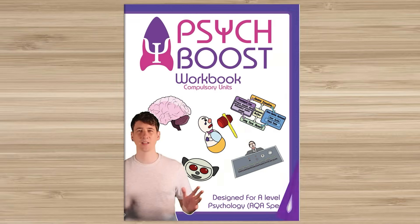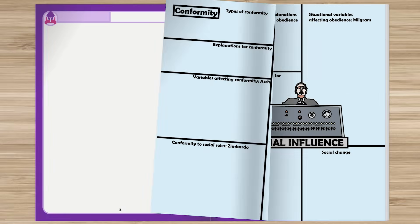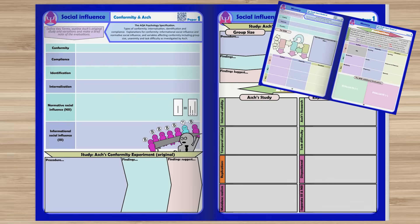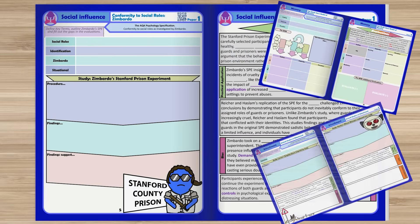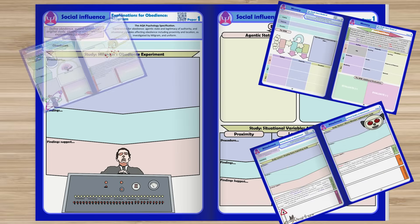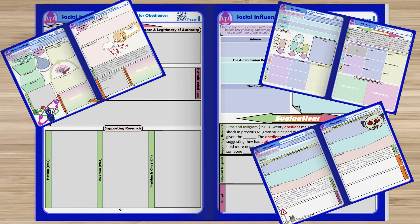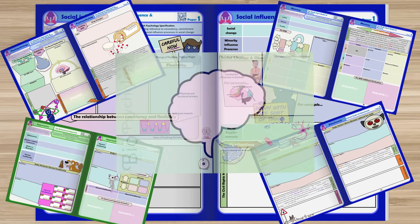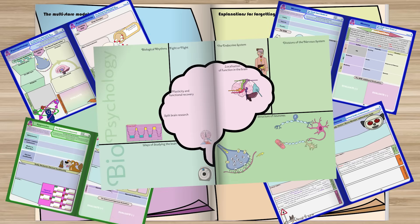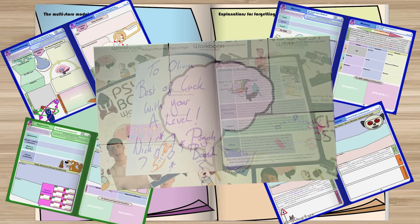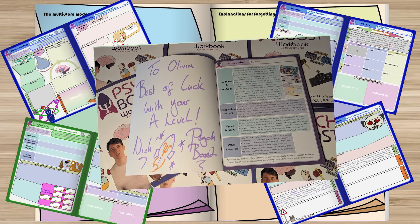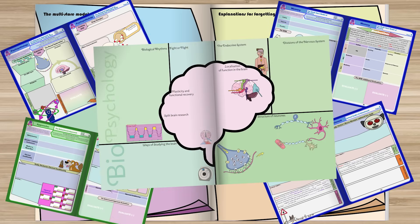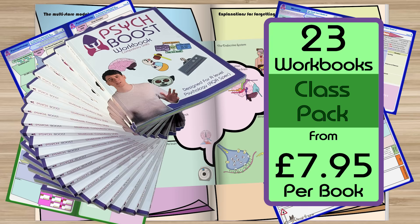You can follow along by making your notes in my PsychBoost workbook — 150 full-colour worksheets covering all the compulsory units. It's on Amazon or you can get signed editions from my website, and teachers can order packs for the whole class.